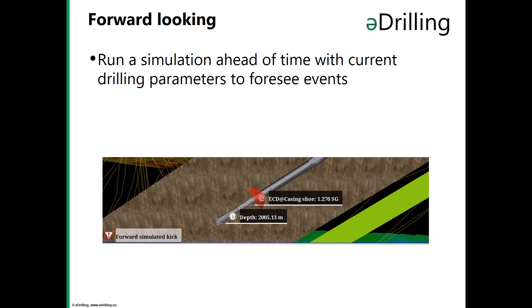When you have real-time simulations you can also have automatic forward-looking. A separate simulator does forward-looking ahead in time or at a certain depth to foresee events, generating automatic messages such as a forward simulation kick or forward simulation loss area. It is always comparing the forward-looking results with the defined boundaries for the well.